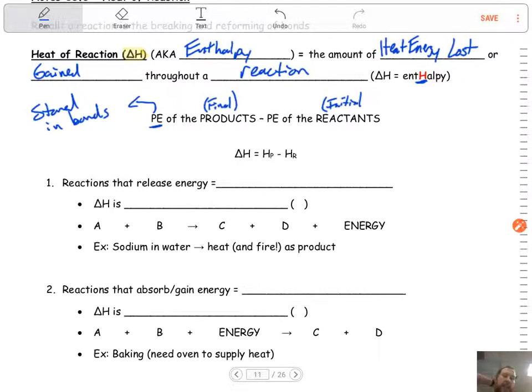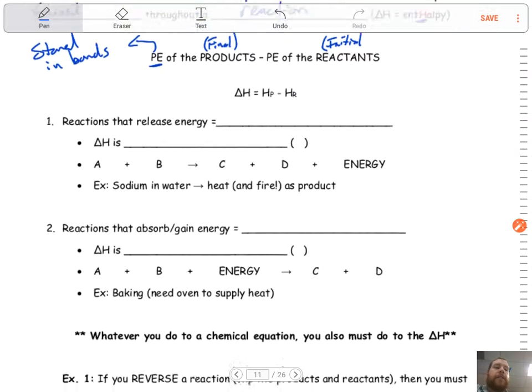So you guys won't be asked in this class to necessarily calculate it by subtracting products minus reactants. You have to know how to apply it and what it means when you're given a delta H. You'll be able to find it using a reference table, which we'll get into a little bit later in this video.